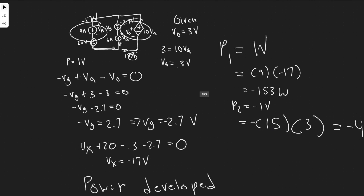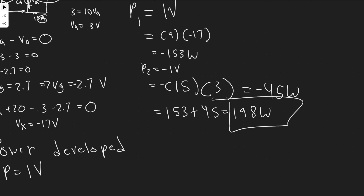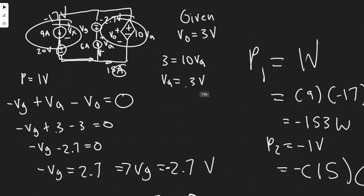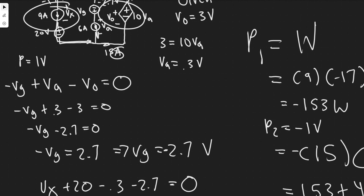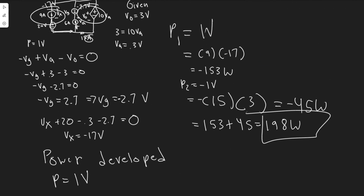Both negative values confirm these sources are developing power. Adding the magnitudes: 153 plus 45 equals 198 watts. So the total power developed in this circuit is 198 watts. We identified which sources were developing by checking the passive sign convention, then summed their contributions to get the final answer.